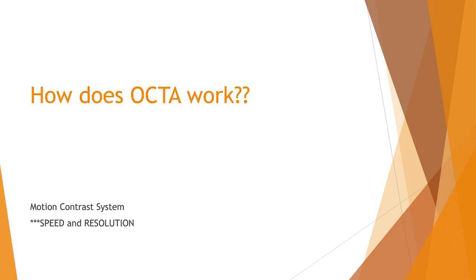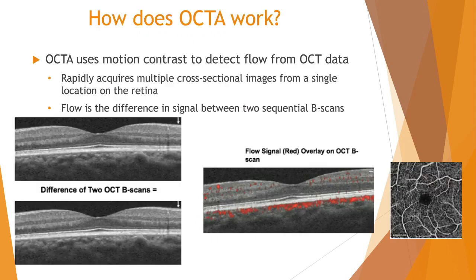OCTA works on a motion contrast system. You take two sequential B-scan images, and the machine looks for subtle differences in signal between those two scans. Any difference in signal is interpreted as flow, represented on what we call the B-scan with flow overlay image. Anywhere you see red pixelation is where the unit found a difference in signal — meaning there's flow there. Interpreting OCTA is learning to understand where on the B-scan there should be flow and where there shouldn't be.